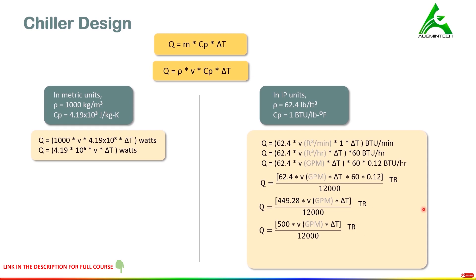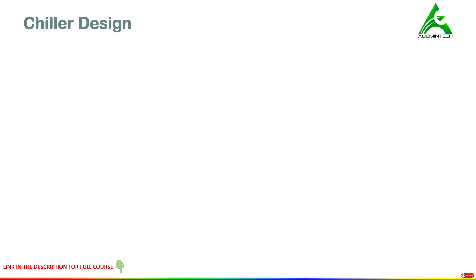The most commonly used equation in the industry is in SI units and in IP units. Finally, this can be simplified further as V × delta T divided by 24. It is very important to note that V must be substituted in gallons per minute and the final answer will be found in tons of refrigeration.